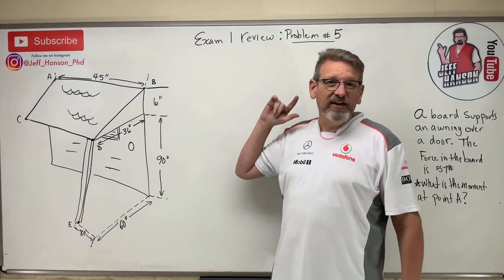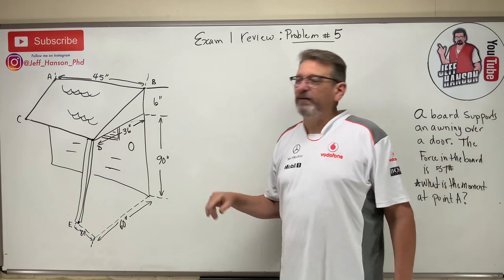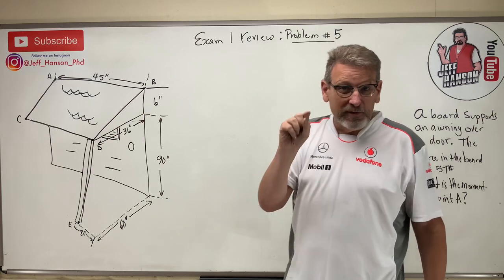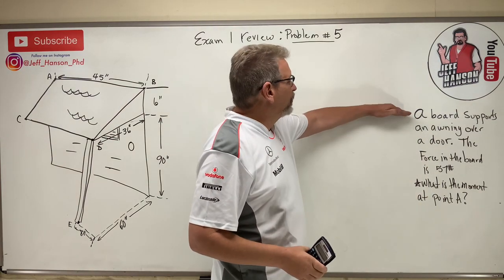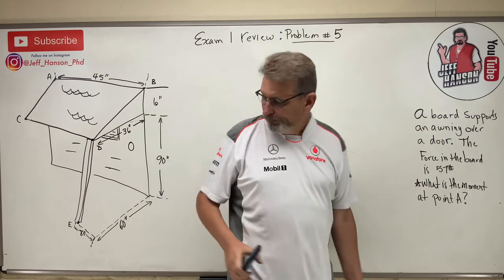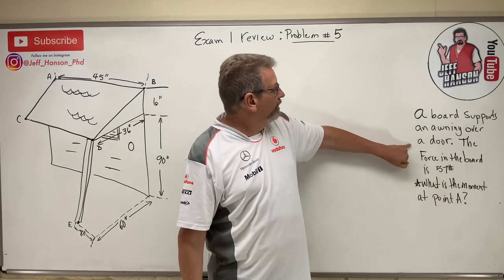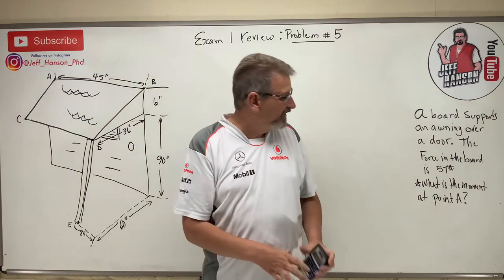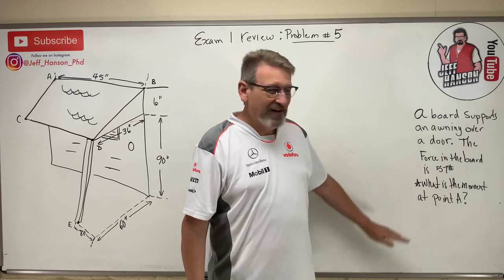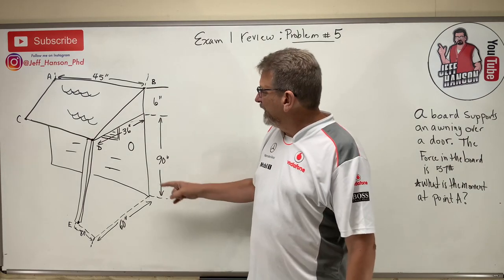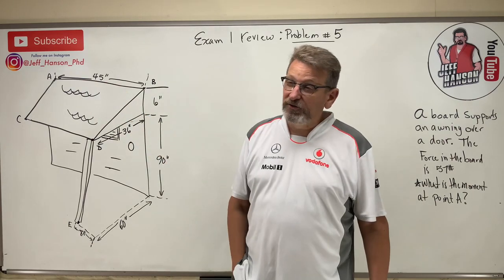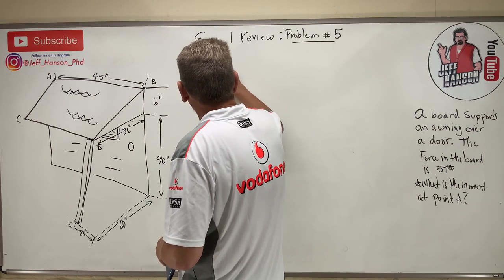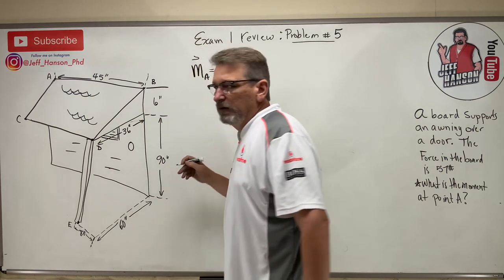Alright, here we are with the last problem for the test review for exam one — this is problem number five. This looks 3D, and in fact it is a 3D moment problem. A board supports an awning over a door; the force in the board is 57 pounds. The board is propped up holding the awning, pushing up with 57 pounds. What is the moment it produces about point A, which is way over there?